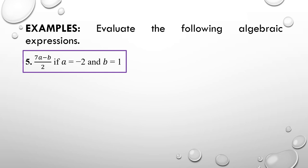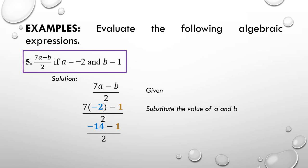Lastly, for example 5, we have the expression 7A minus B over 2, where A is negative 2 and B is 1. Substituting, we get 7 times negative 2 minus 1 over 2. Simplifying: 7 times negative 2 equals negative 14, so we have negative 14 minus 1 over 2. The numerator simplifies to negative 15, giving a final answer of negative 15 over 2. Those are the examples for evaluating algebraic expressions. Until our next lesson, bye bye.